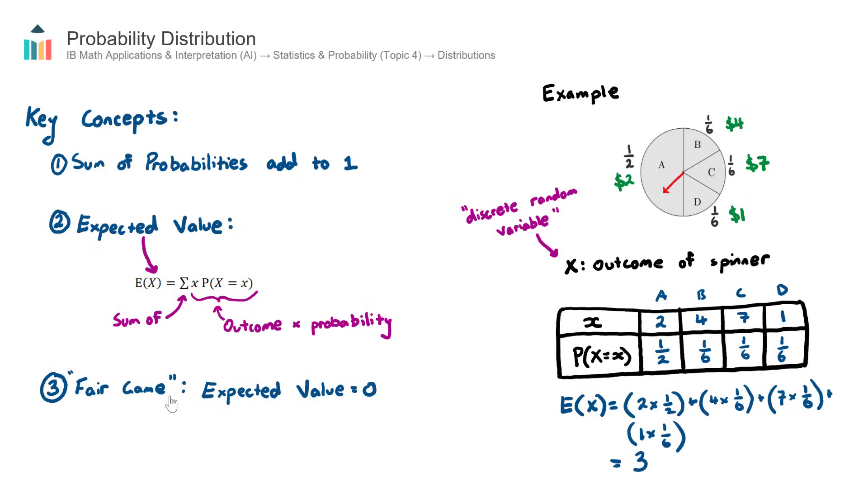Now the final concept to cover is this concept of a fair game. This is often the last point of a probability distribution question. It says, what would the cost of playing the game be in order for this game to be fair? And by fair, it means the expected value should equal zero. So if you were to average out the total gains per spin, which in this case is three, what would the ticket price need to be such that the result would be a zero expected value long-term?